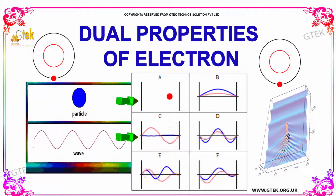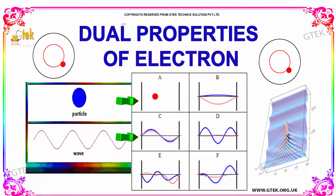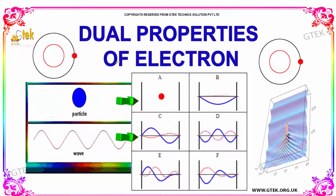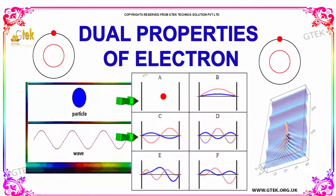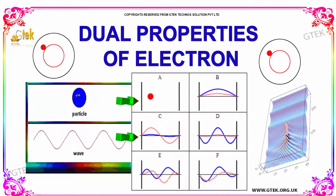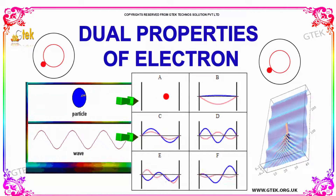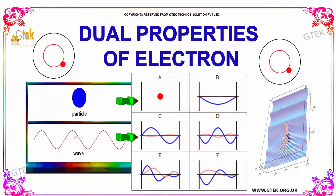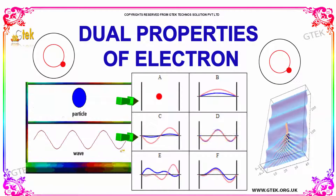The first area which we are going to discuss is the dual properties of the electron. Electrons can be a particle and also they can be a wave. Now, we are going to discuss on it.